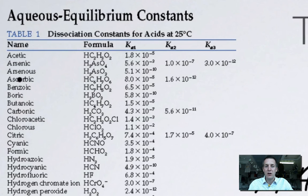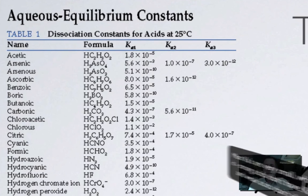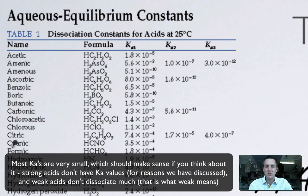Let's have a look at arsenous acid here. It's got a Ka of 5.1 times 10 to the minus 10. So that's a tiny value. That means that hardly any of it dissociates. Ethanoic acid, or in other words, acetic acid, 1.8 times 10 to the minus 5.